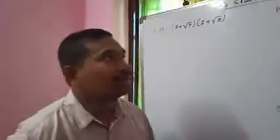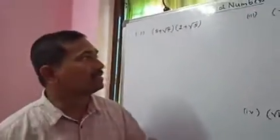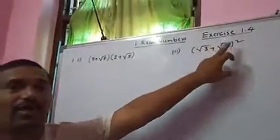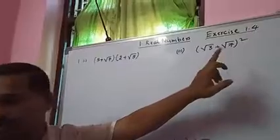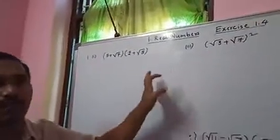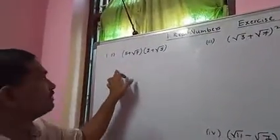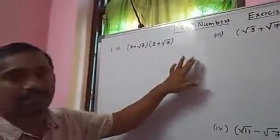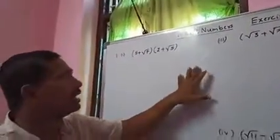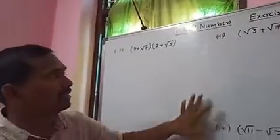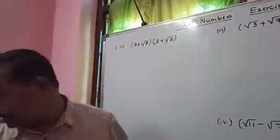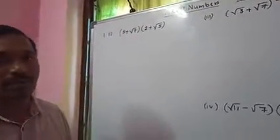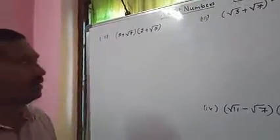Good morning students. Today let us discuss the first part of Real Numbers, Exercise 1.4. First problem: simplify the following expressions. I am explaining three problems. We have a total of four problems, and we have to do one.